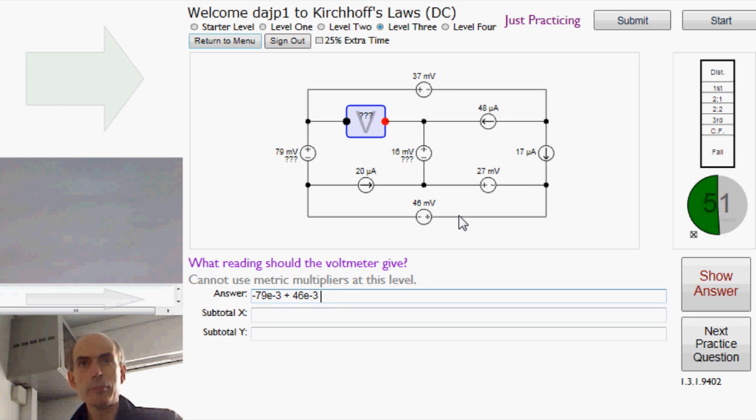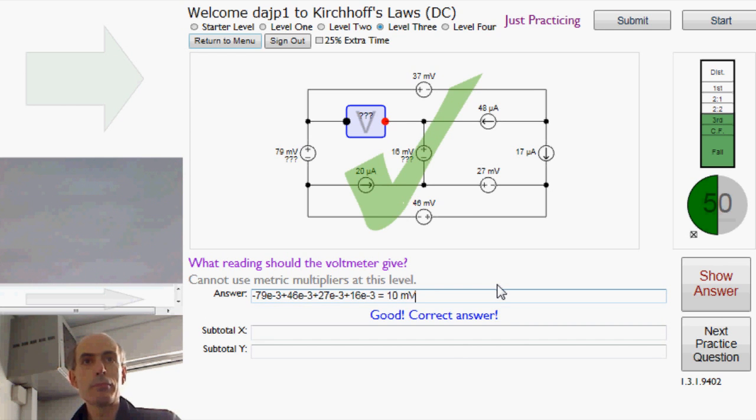and then up by 27, and then up by 16. And all of those are in millivolts. Answer, total of 10 millivolts between there and there. Correct answer.